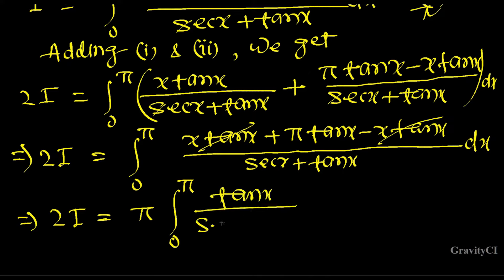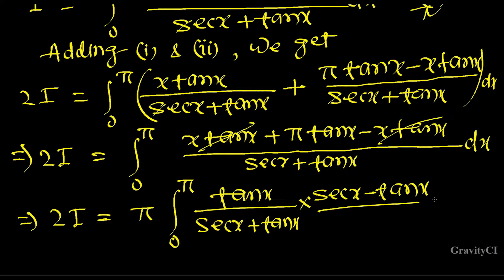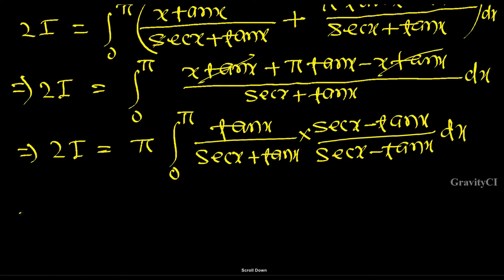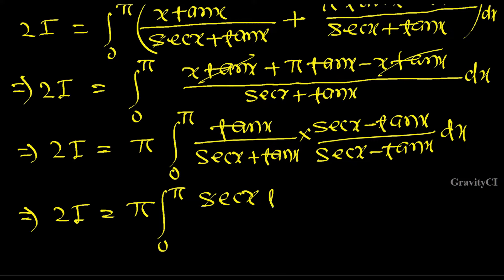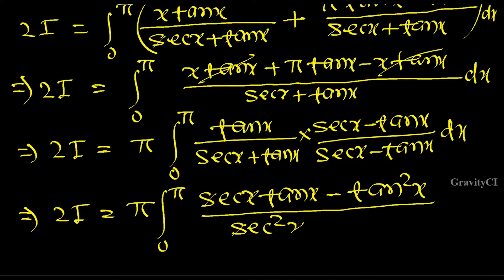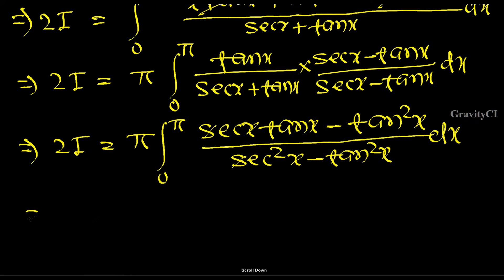So 2I equals π times integral from 0 to π of tan x / (sec x + tan x) dx. To simplify, we rationalize by multiplying numerator and denominator by (sec x - tan x). This gives 2I equals π times integral from 0 to π of (sec x·tan x - tan²x) / (sec²x - tan²x) dx.